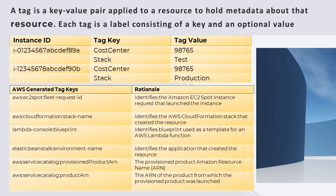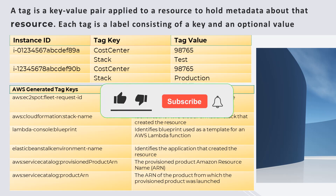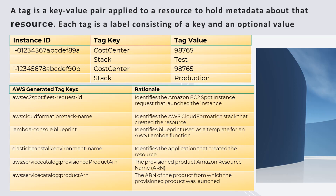A tag is simply a label that you or AWS assigns to an AWS resource. Each tag consists of a key and a value. For each resource, each tag key must be unique and each tag key can only have one value. You can use tags to organize your resources and cost allocation tags to track your AWS costs on a detailed level. After you activate cost allocation tags, AWS will use them to organize your resource costs on your cost allocation report.